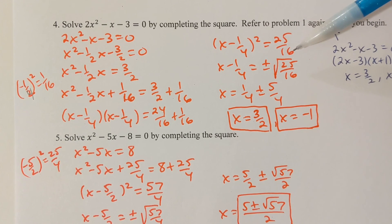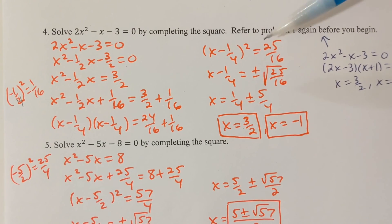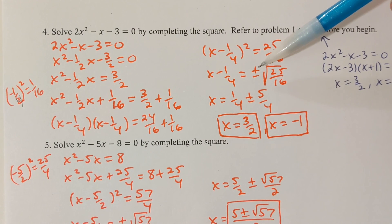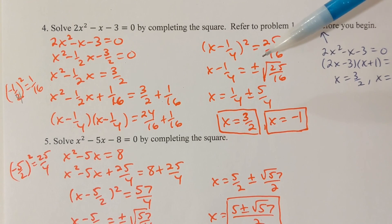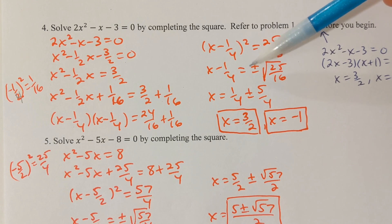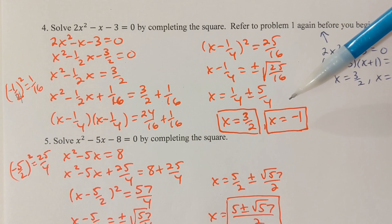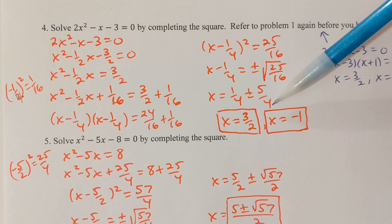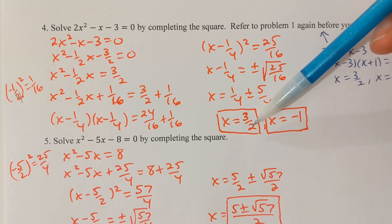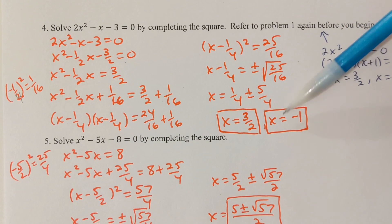At this point I'm ready to take the square root of both sides. The square root of (x - 1/4)² is x - 1/4, plus or minus the square root of 25/16. Add 1/4 to both sides since we're solving for x. The square root of 25 is 5 and the square root of 16 is 4. So 1/4 + 5/4 = 6/4 = 3/2, and 1/4 - 5/4 = -4/4 = -1.